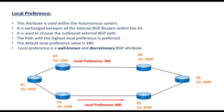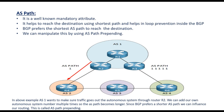Next is AS Path, a well-known mandatory attribute. It helps reach the destination using the shortest path and assists in loop prevention inside BGP, which was discussed in detail in our previous video. BGP prefers the shortest AS path to reach the destination, and we can also manipulate this using AS path prepending.